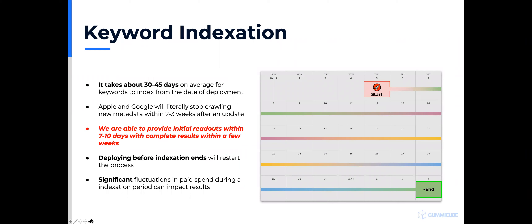Some developers experiment by changing keywords very frequently, while others wait months to get a read on results. The reality is Apple and Google index you for two to three weeks after you change your metadata — we can detect that using our technology. You can get a solid readout in formal reports seven to ten days after indexation completes. In a good position, you can do keyword metadata optimization about every 30 days and get a solid view on how an optimization performed.